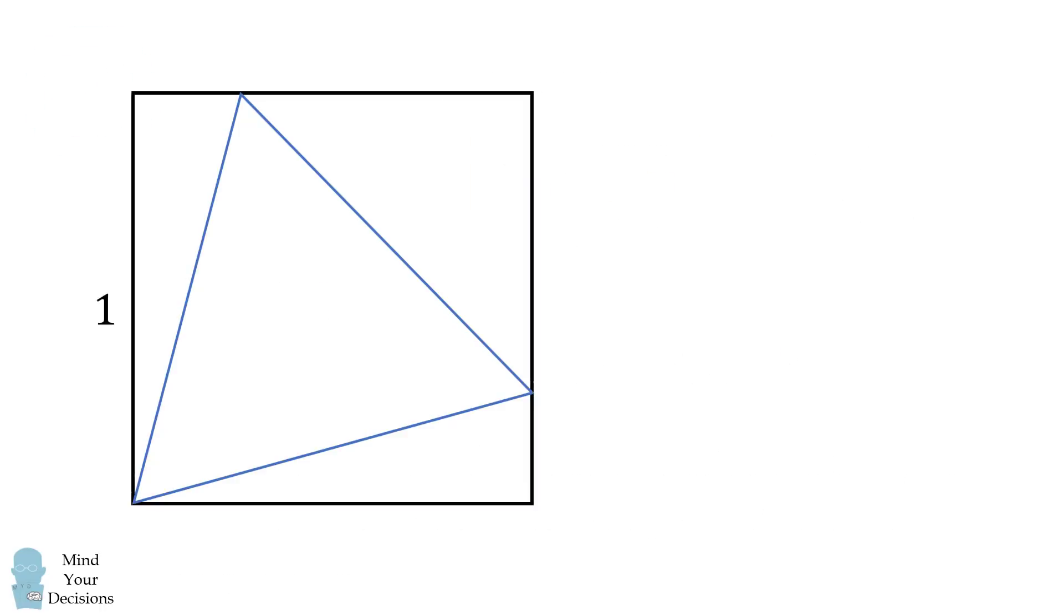So how can we solve this problem? Let's write s for the length of the equilateral triangle side. The square has a side length of 1. Now in this right triangle, suppose the other leg is equal to x. By the Pythagorean theorem, s squared is equal to 1 squared plus x squared.